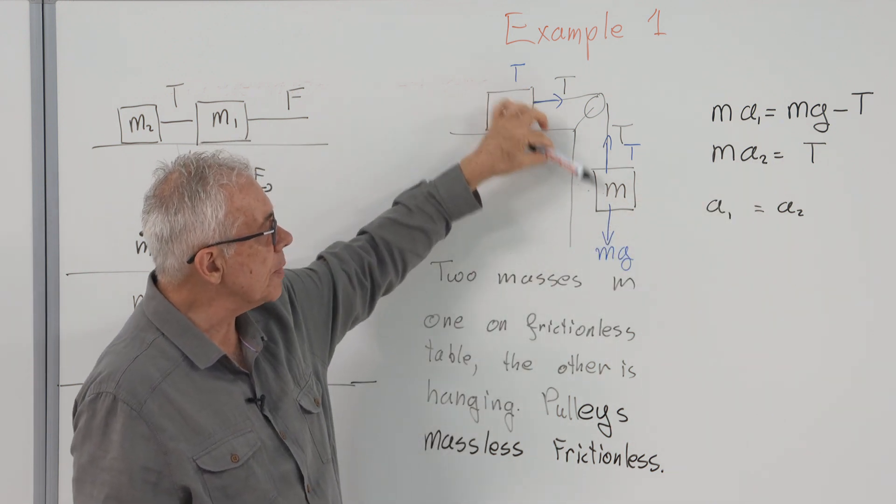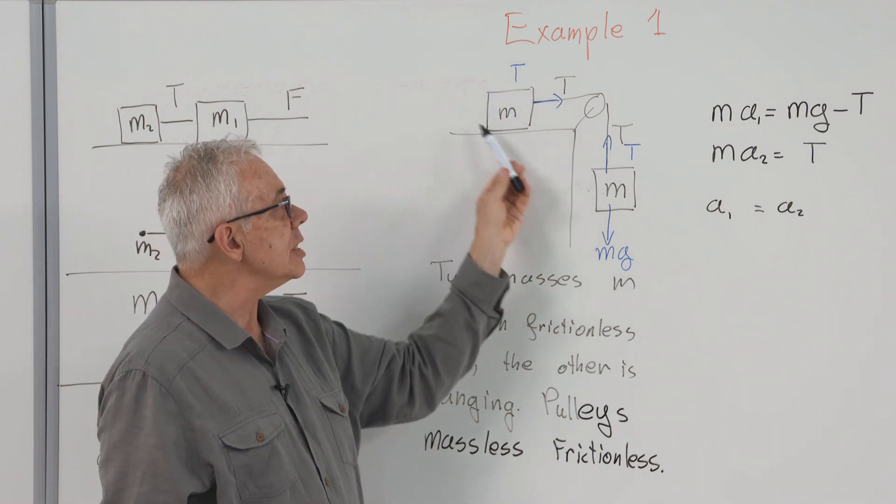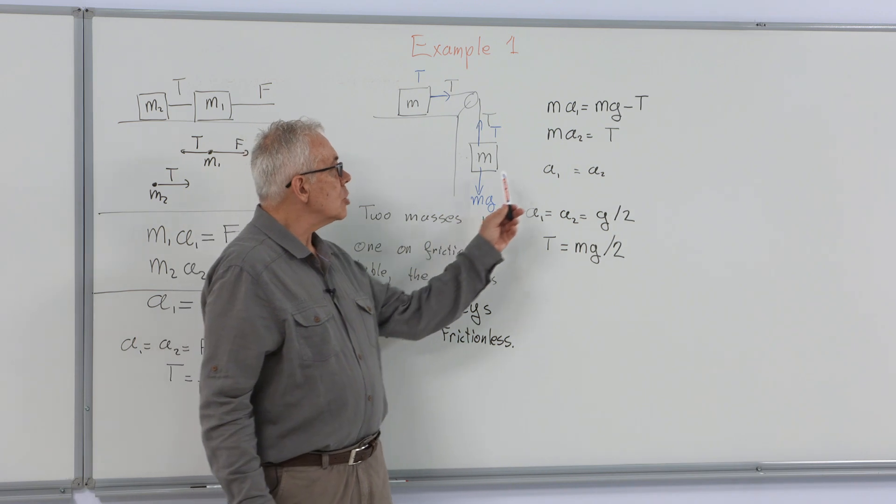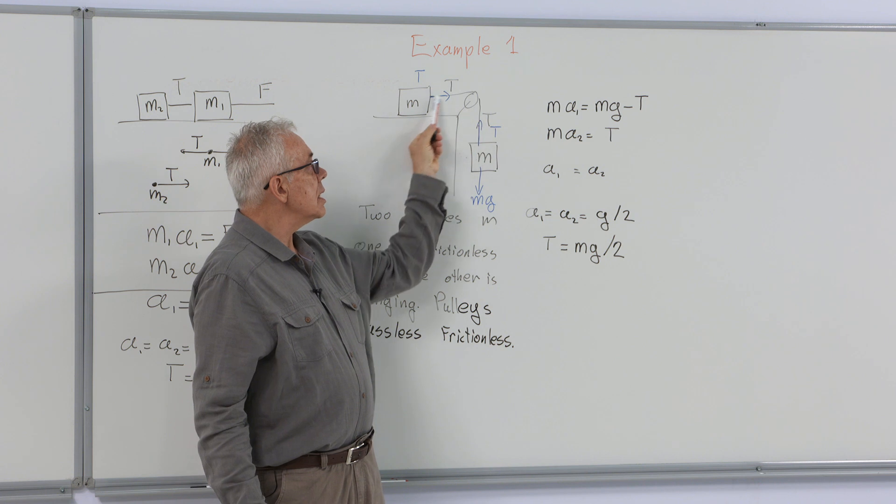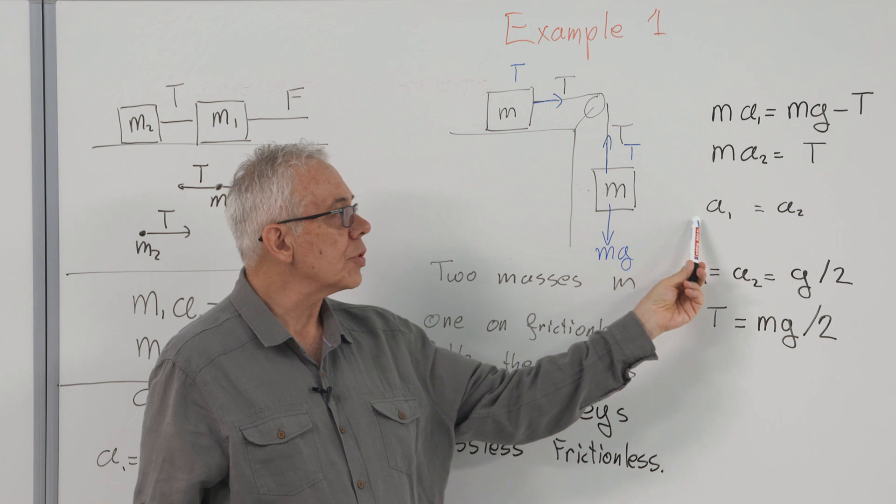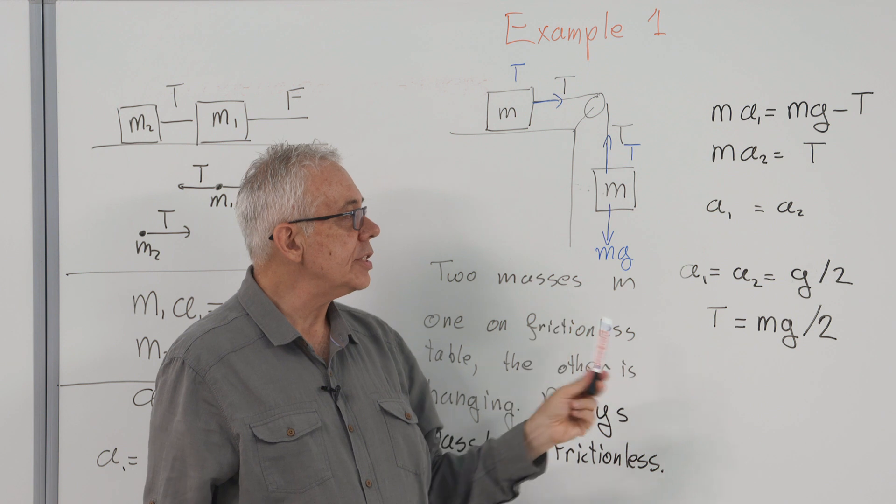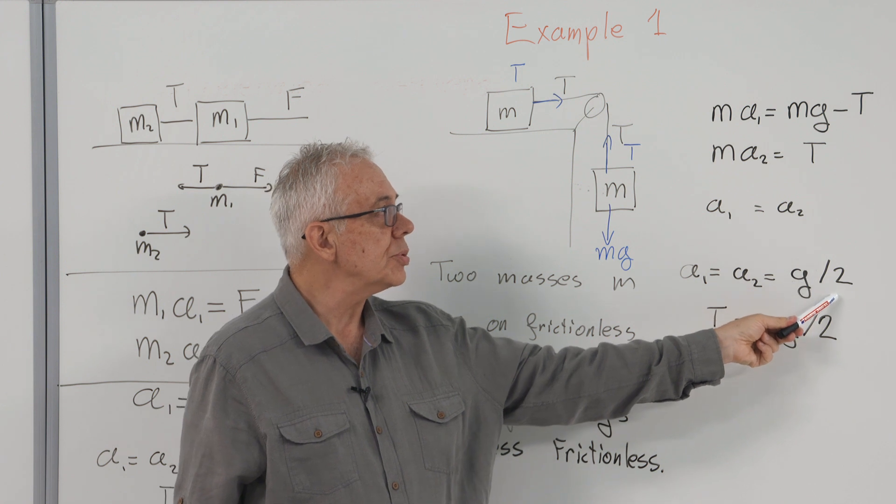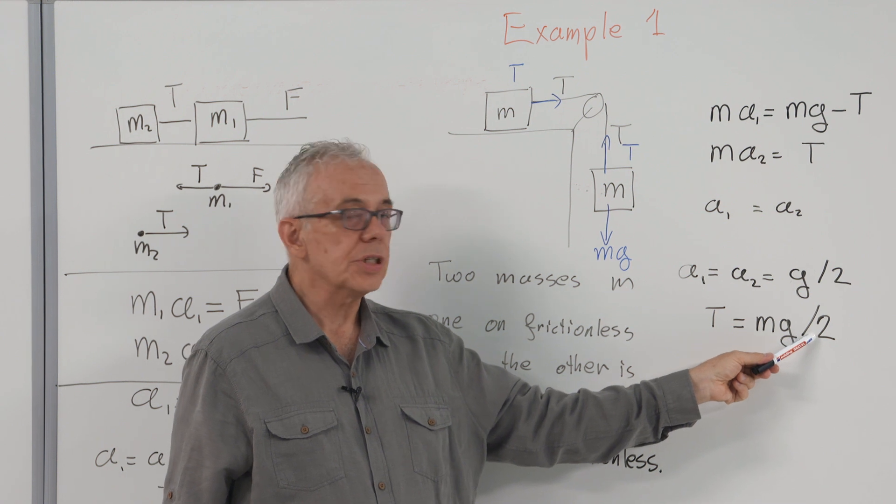Please note that for this problem, I chose the direction downward as positive. For this mass, I chose the rightward direction as positive. Our constraint equation is that the string length is constant so that the displacements are equal. Therefore, their accelerations are equal. And solving these three equations, we get A1 equals A2 equals G over 2, and the tension is Mg over 2.